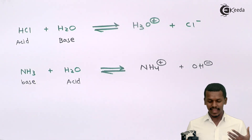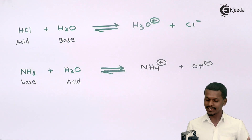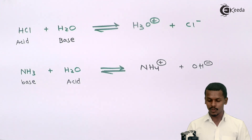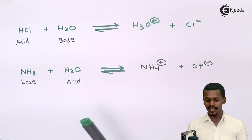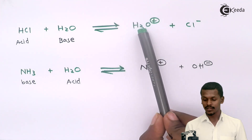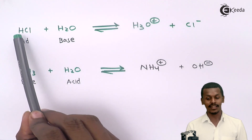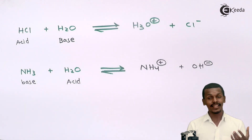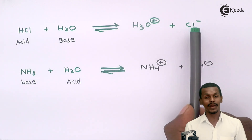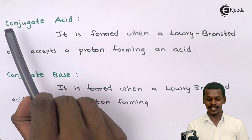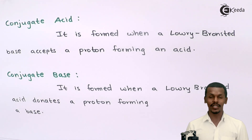So according to the Lowry-Bronsted theory, whether a substance is an acid or a base depends on proton donation or proton acceptance. Additionally, since this is a reversible reaction, if H₃O⁺ donates its proton to Cl⁻, it will form HCl — meaning H₃O⁺ acts like an acid and Cl⁻ acts like a base. This leads us to a new term: conjugate acid and conjugate base.